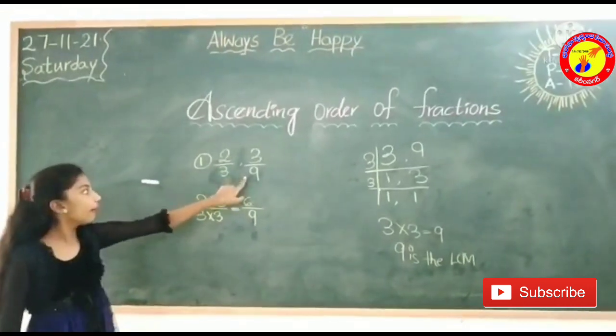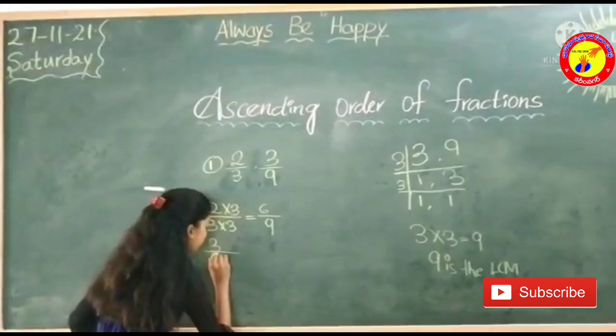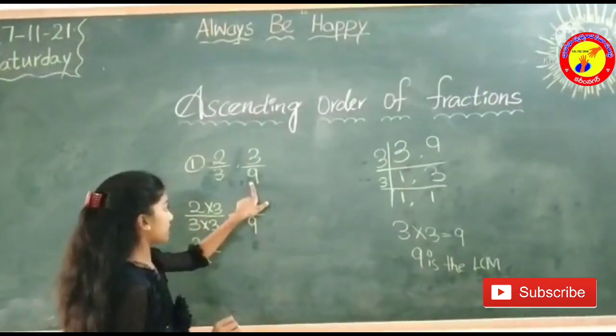Now we should take second fraction, 3 by 9. In 9 tables, 9 1s are 9.